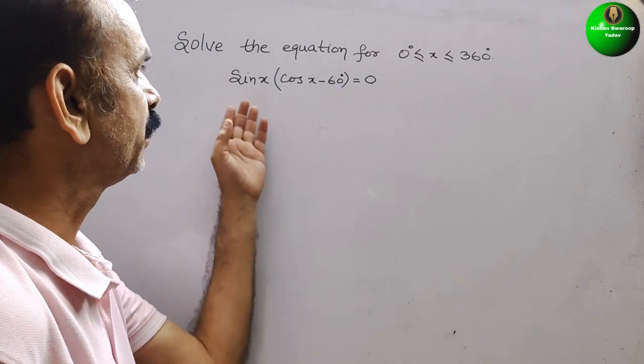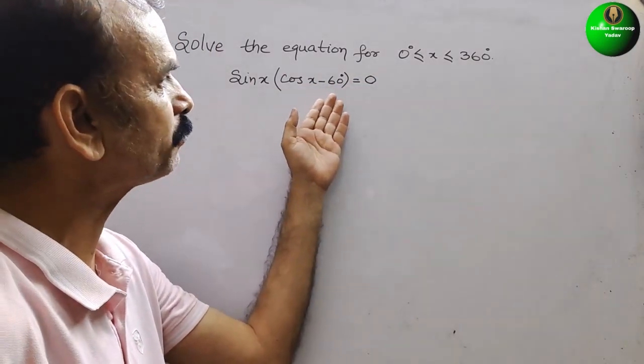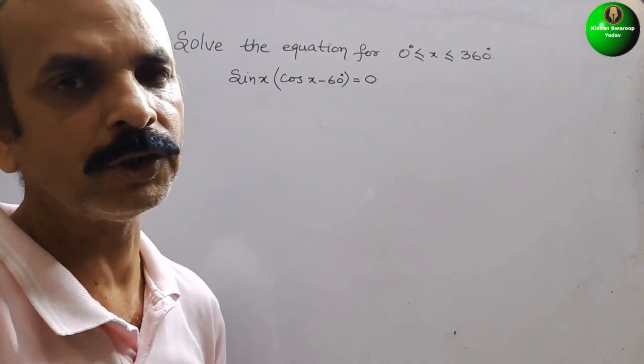See that, what they have given? They have given sin x in bracket, they have given cos(x - 60°) that is equal to 0.